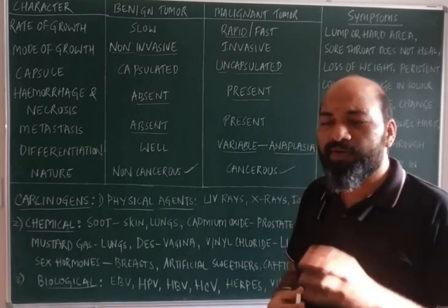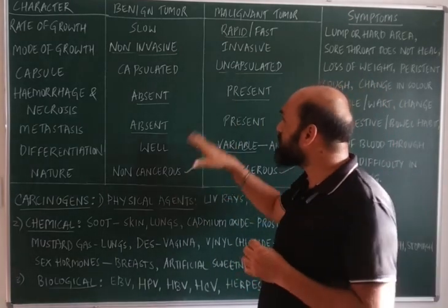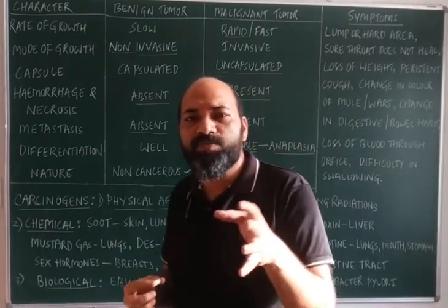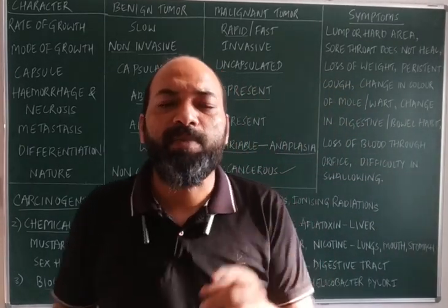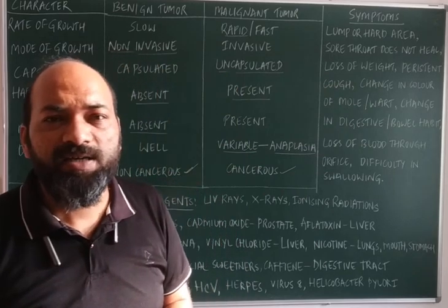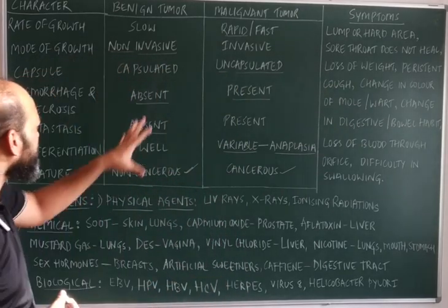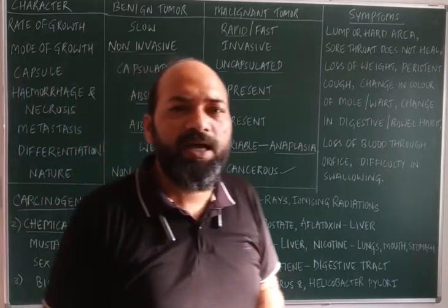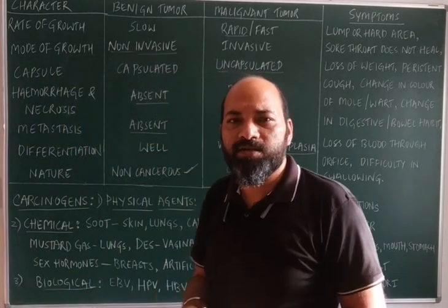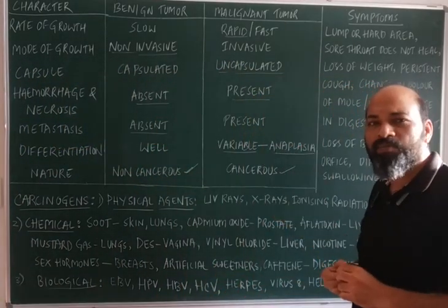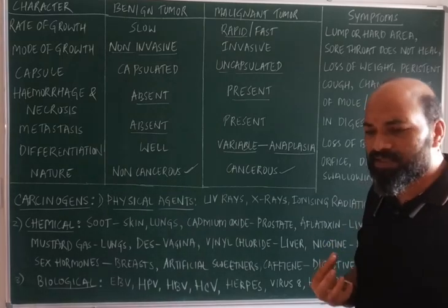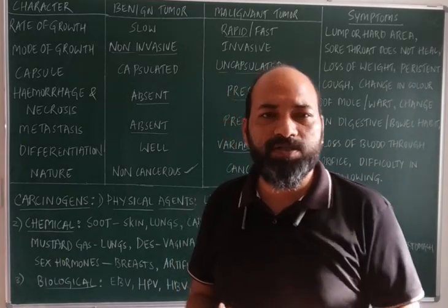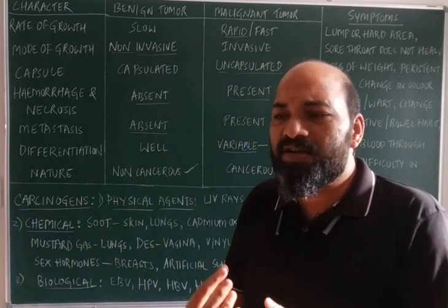In summary, benign tumors are non-cancerous and malignant tumors are cancerous, though benign tumors can very rarely convert into malignant tumors. Now, how is cancer caused? The cancer-causing agents are called carcinogens, and there are mainly three types of carcinogens known to induce cancer in the human body.